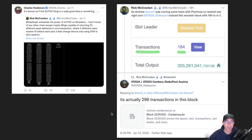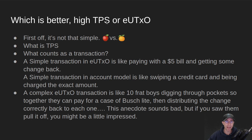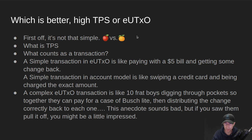So we're talking about these models — which is better, having high transactions per second or the EUTXO model? Well, first off it's not that simple. It's very much comparing apples to oranges. You have to have a common definition of what a transaction is. If you're comparing Cardano to some other blockchain, you have to really understand what does a transaction mean on that particular blockchain. It may just be as simple as moving an exact amount of change from one to the other, or it may be like the EUTXO model which is much more complex.